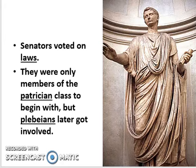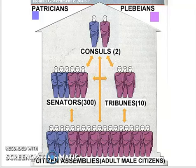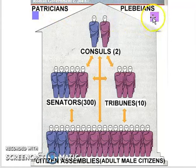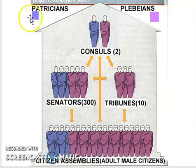Senators voted on laws and were only members of the patrician class to begin with, but later on plebeians would get involved. This is a good visual representation of how the social structure worked. Please pay attention to the color coding for patricians and plebeians — we'll call one purple and one blue. Originally, all senators and consuls would only be the blue, the patricians, so this diagram is showing a later representation.